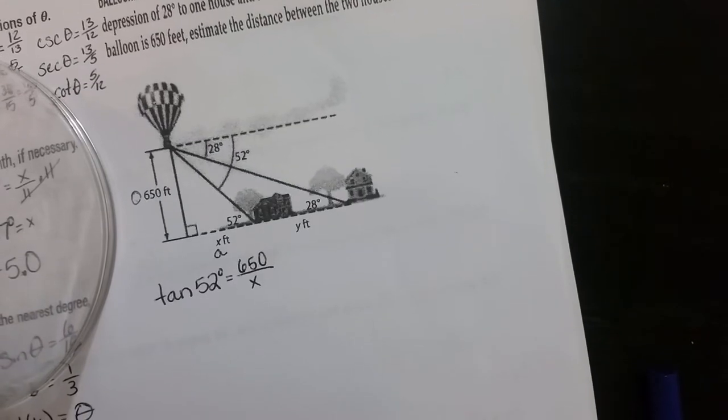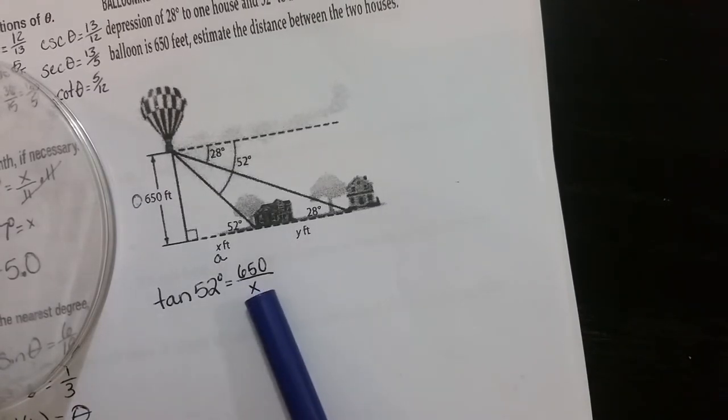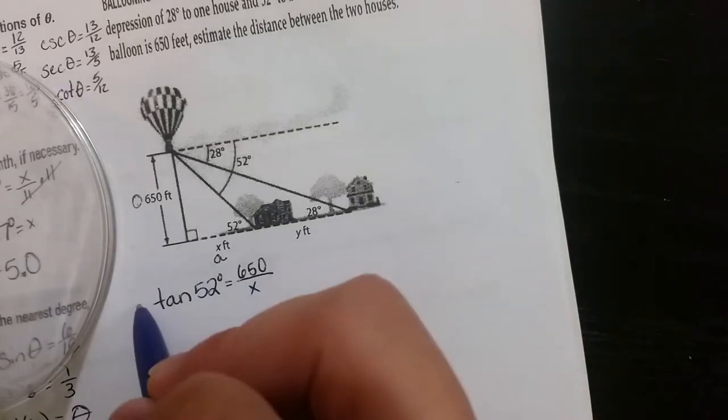Now in this case, there's a couple different ways to do this, but since I only have one variable, I would suggest that you solve for X. Now notice the X is on the bottom, so basically what's going to happen is you're going to bring X to the top and then you're going to divide by tan 52.